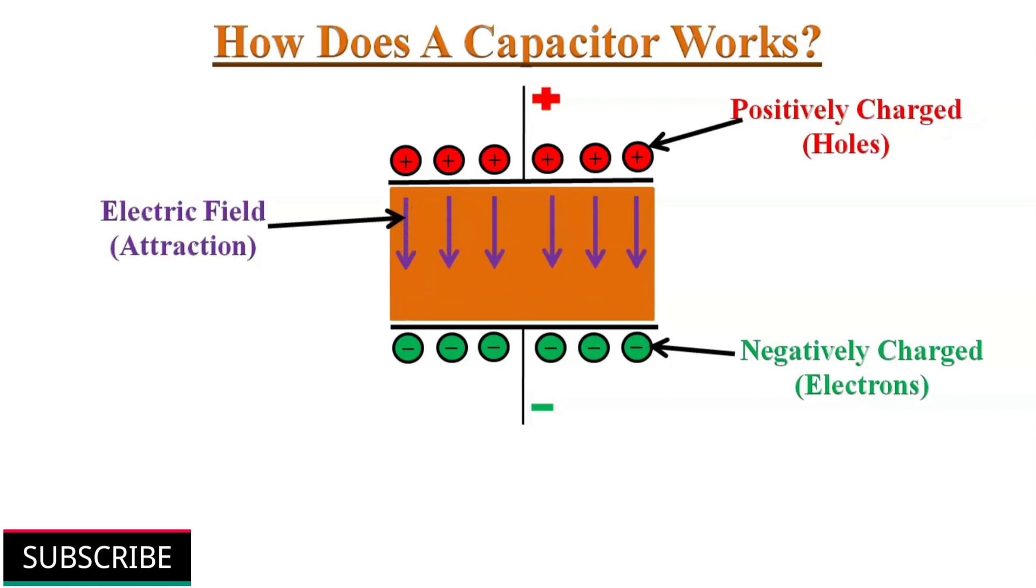This creates an electric field between them. The strength of the electric field is given by the expression voltage divided by the distance between the plates. E equals to V by D, volts per meter.